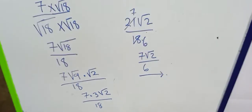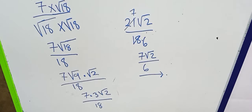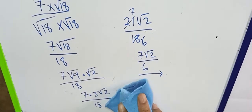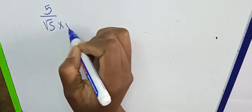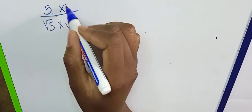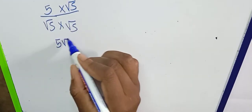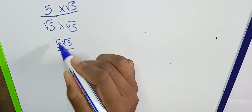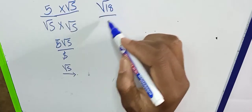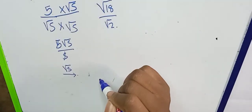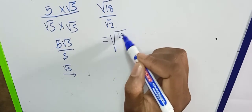We simply got rid of the surd number from the denominator — it's mathematically wrong to have a surd number as your denominator. The next one is five over root five. You do the same: multiply by root five over root five. So it's five root five over five. The fives cancel out, so your answer is just root five.